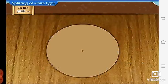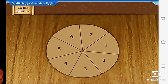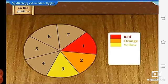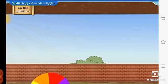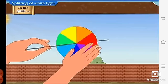One side of the disc was divided equally in seven petals of the seven colors. Red, orange, yellow, green, blue, indigo and violet.